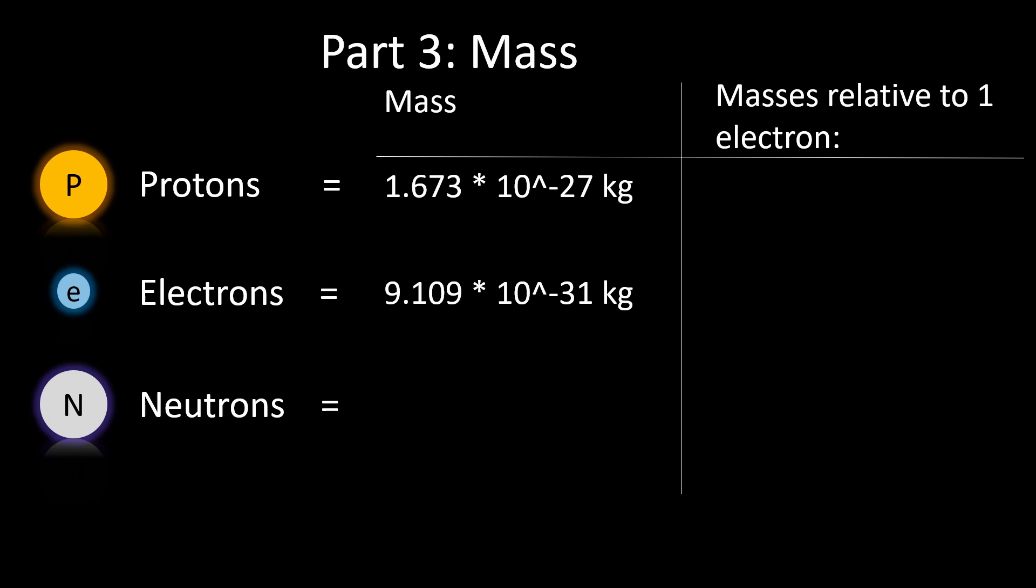Interestingly, the mass of a neutron is almost equal to that of a proton at approximately 1.675 × 10^-27 kilograms.